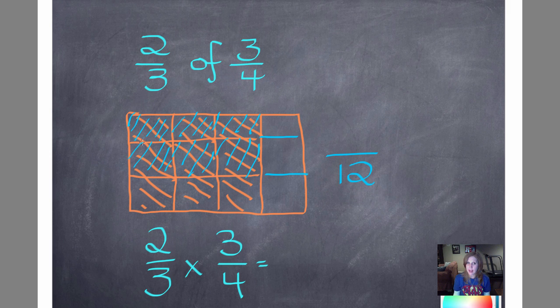And what she ate, two-thirds right here of that, is one, two, three, four, five, six parts. Six-twelfths.